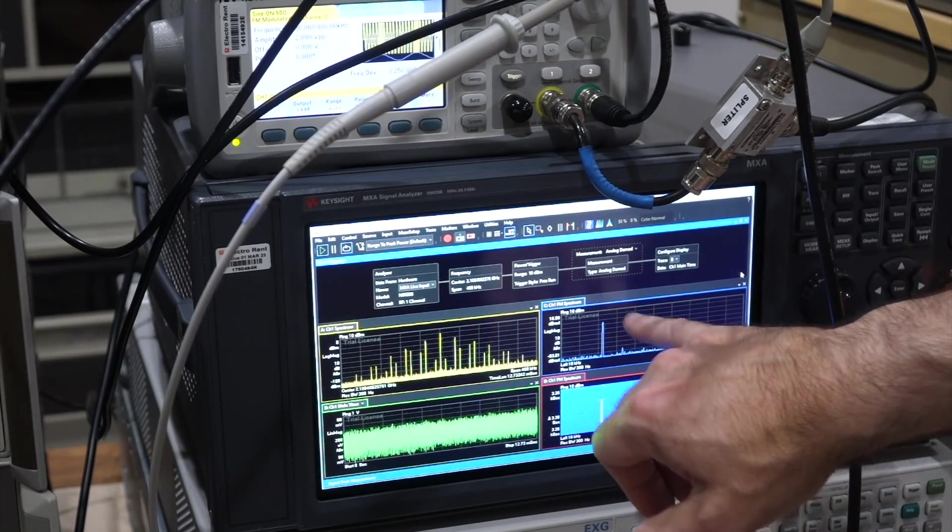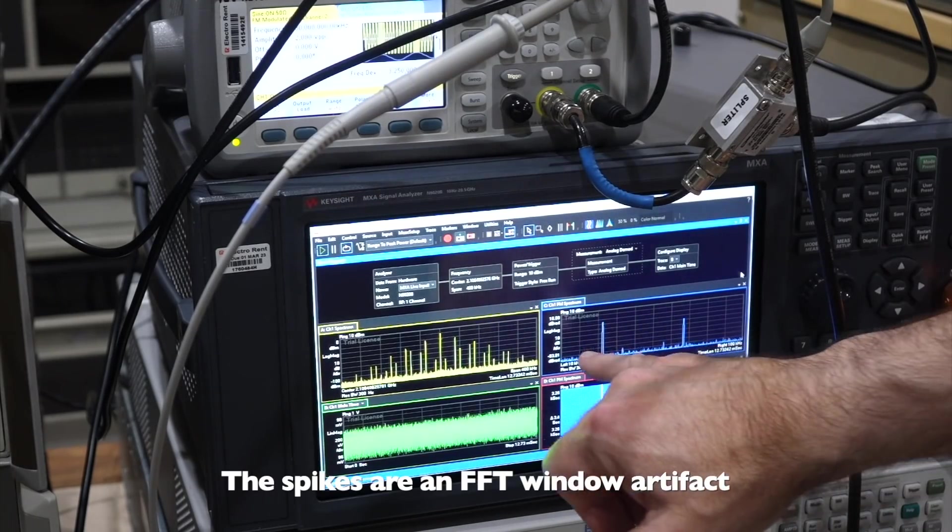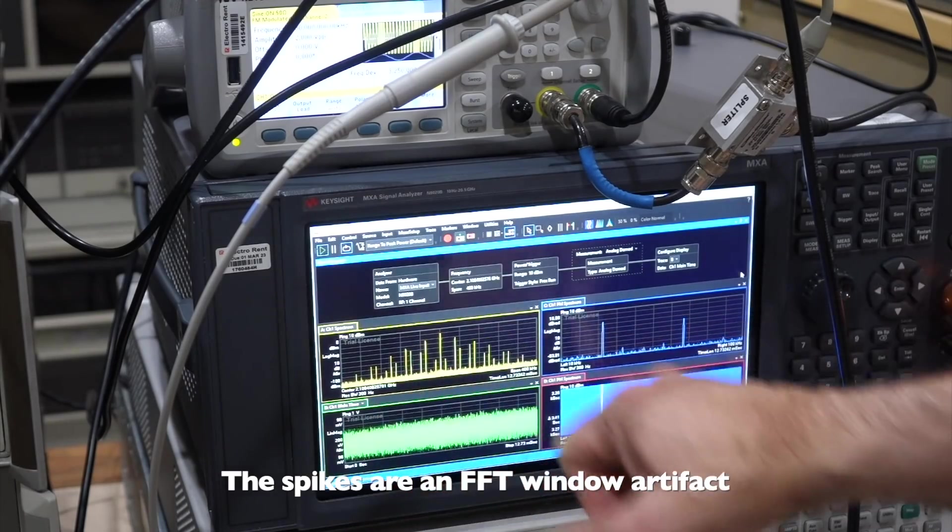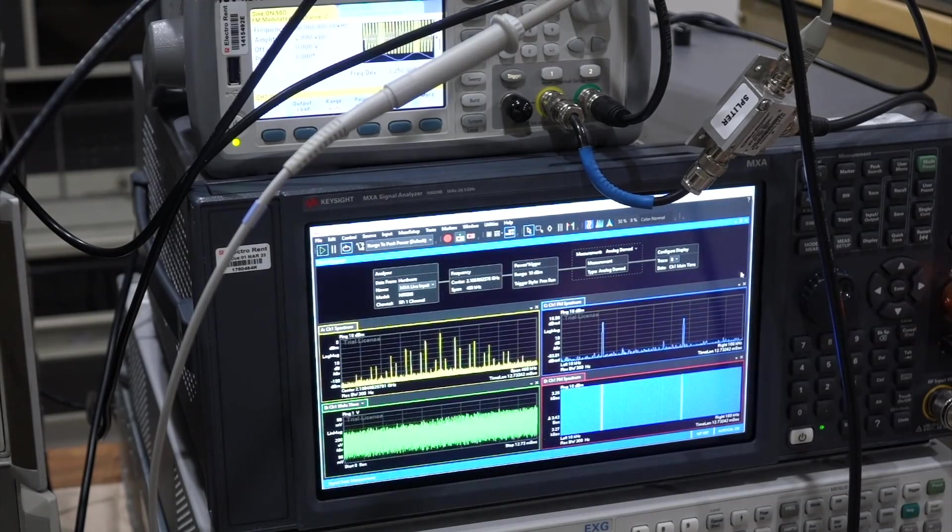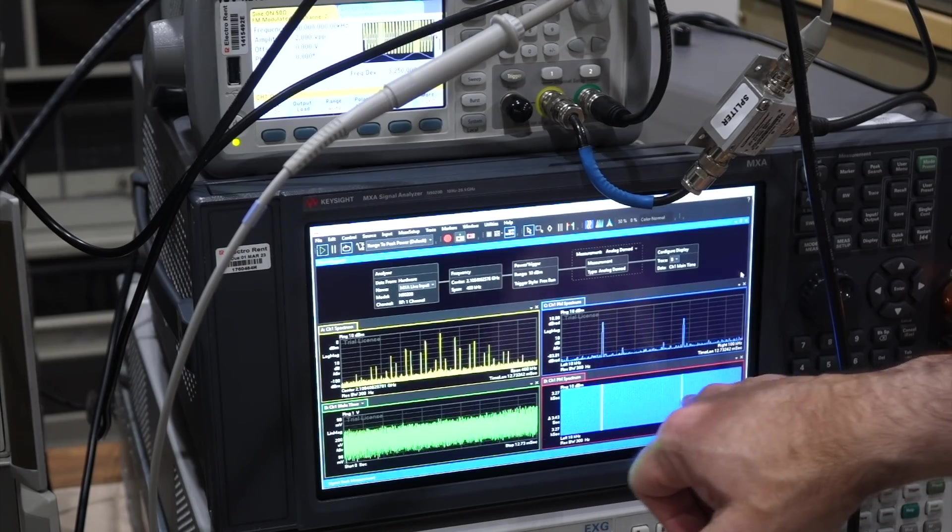And there's a few spikes, but they are 50 dB down. And that's probably because I'm doing just a partial FFT transform. So you can see now my two signals.